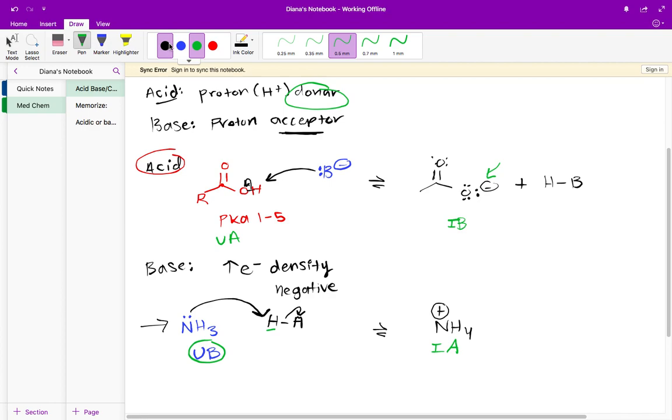Now that it gained a proton it became NH4 plus. So clearly this is ionized. I'm going to go ahead and label this as an ionized something. Now it's definitely an acid for two reasons: one is we started with an unionized base so if a base accepts a proton then it's going to become an acid.